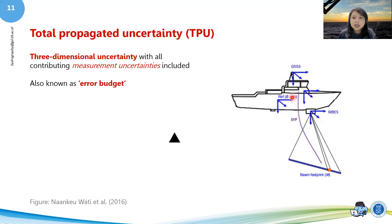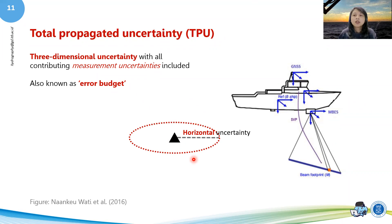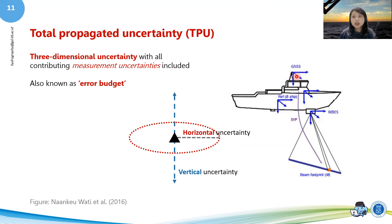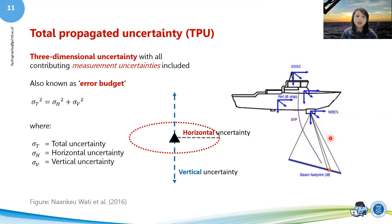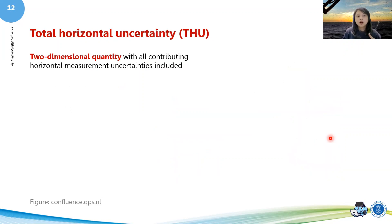Each reference frame — if we imagine that every single center point of this reference frame is at X, Y, Z = 0, 0, 0 — we will have a horizontal uncertainty, because sometimes a GNSS measurement has an uncertainty in its horizontal positioning. And then you've also got your vertical uncertainty. For example, if a multibeam is surveying, it has its own vertical uncertainty — it's uncertain about how deep the measurement actually is. So the total uncertainty, the TPU or the error budget, is the horizontal uncertainty plus the vertical uncertainty. When we are talking about the horizontal, we are only talking about the two-dimensional quantity with all the contributing horizontal measurements.